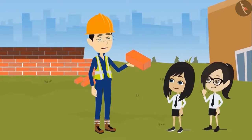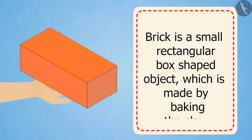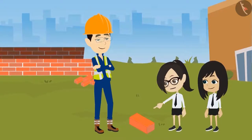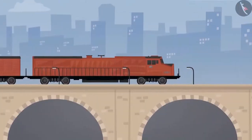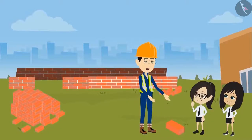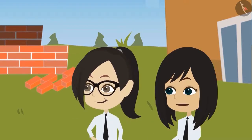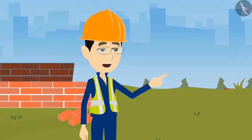This red color, small box-shaped object you are looking at is called a brick. A brick is a small rectangular box-shaped object which is made by baking clay. The walls of our school are also made of bricks — and not just this school. Your home, all the buildings in this city, and bridges are all made of bricks. Bricks are used in almost every construction work.